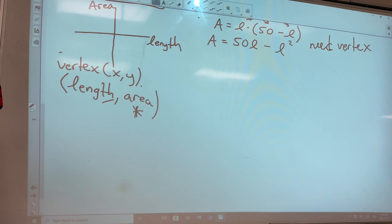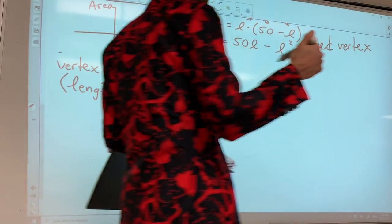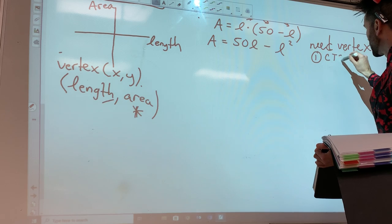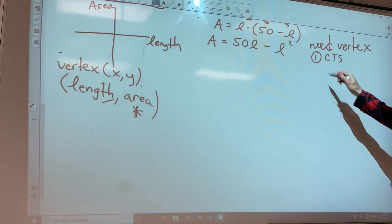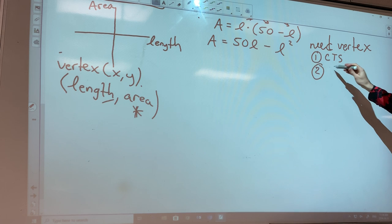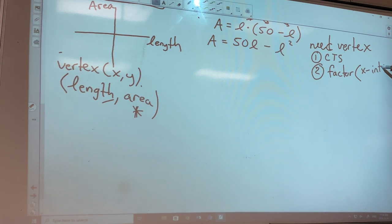There are two methods to get the vertex. You could complete the square, which gives it to you in standard form. Another way — the easier way in this case — is to factor it to get the x-intercepts, and then use that formula. When we factor it, we get the intercepts, and then how do we get the x value of the vertex? You average them: (x1 + x2) / 2. Finding the vertex gives us the maximum area.